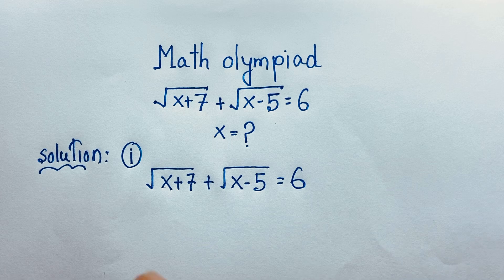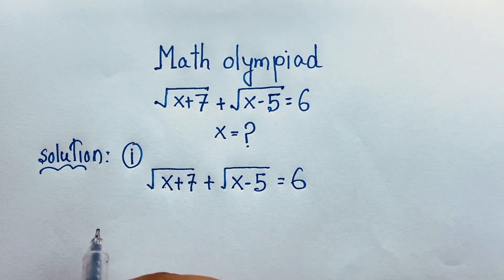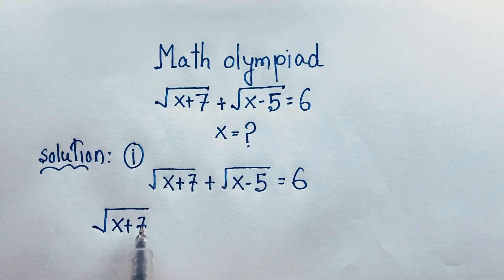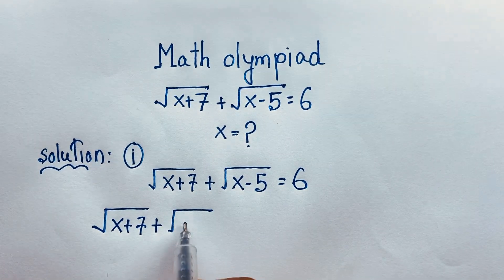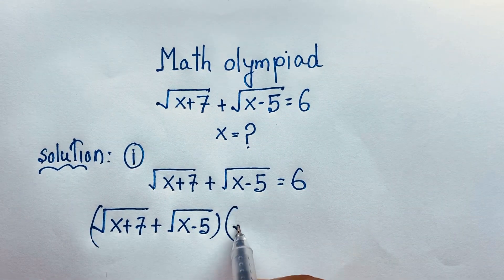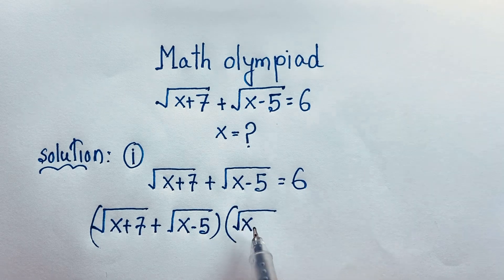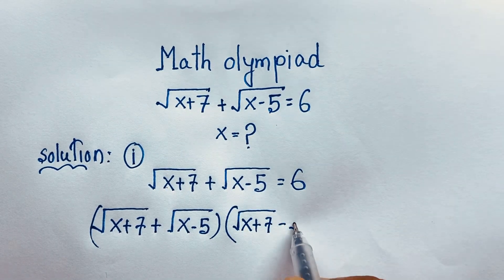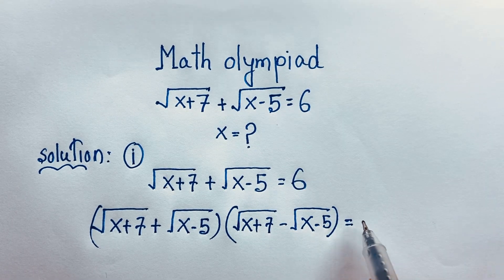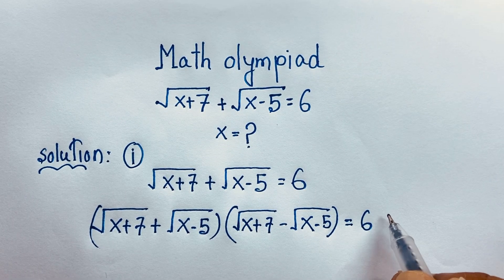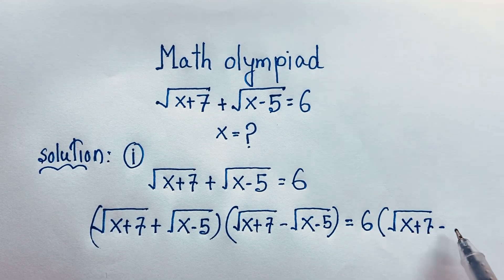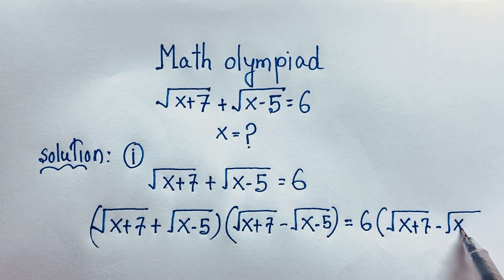Now, at this moment, I multiply both sides. We have: [√(x+7) + √(x−5)] times [√(x+7) − √(x−5)] is equal to 6 times [√(x+7) − √(x−5)].